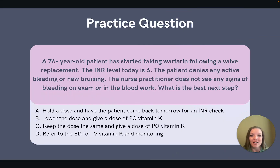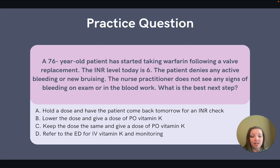Let's do a quick practice question here to apply what we've learned. A 76-year-old patient has started taking warfarin following a valve replacement. The INR level today is 6. The patient denied any active bleeding or new bruising. The nurse practitioner does not see any signs of bleeding on exam or in the blood work. What is the best next step? A: hold a dose and have the patient come back tomorrow for an INR check. B: lower the dose and give a dose of PO vitamin K. C: keep the dose the same and give a dose of PO vitamin K. D: refer to the ED for IV vitamin K and monitoring. Go ahead and pause the video if you want to take a second.